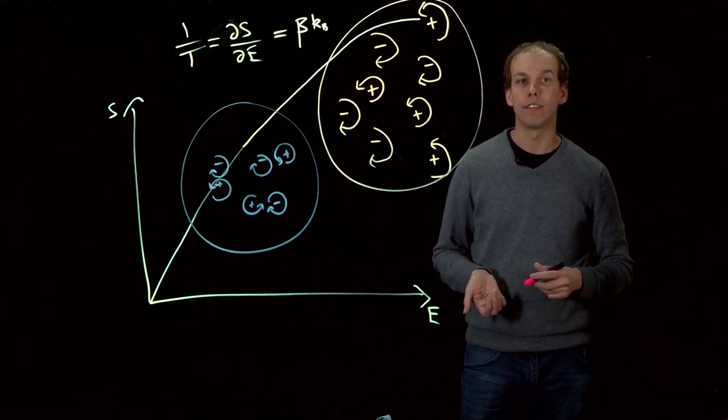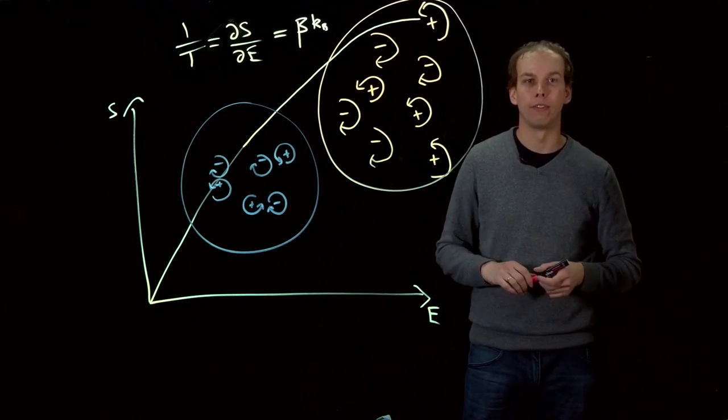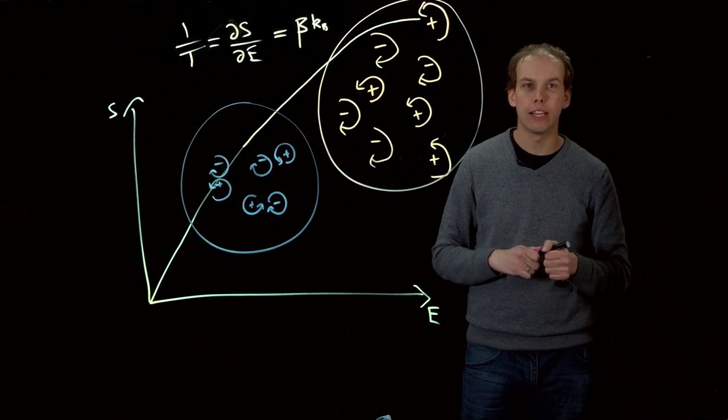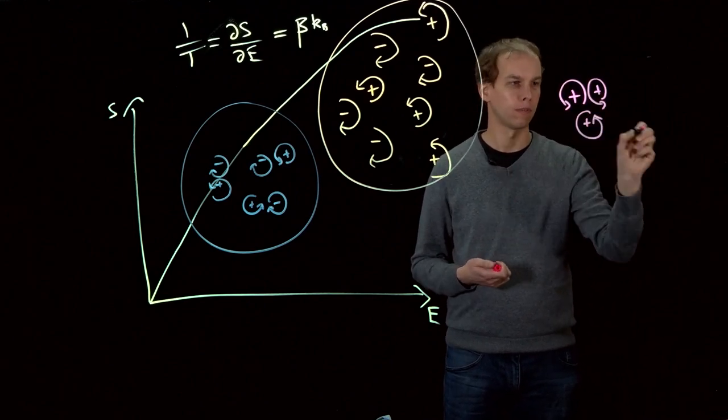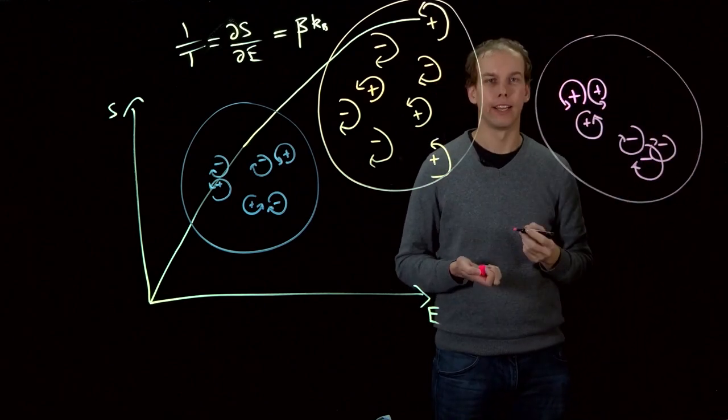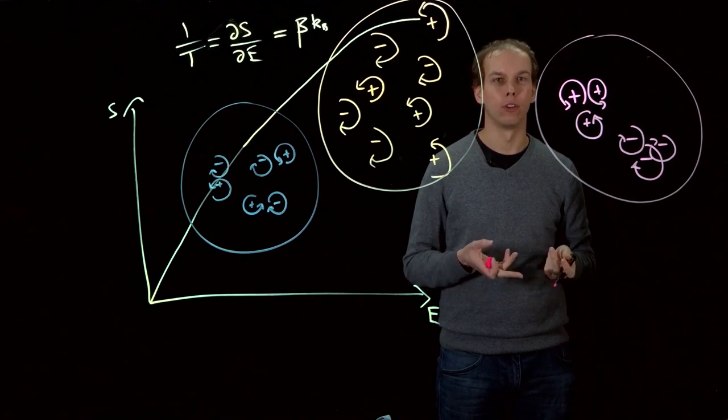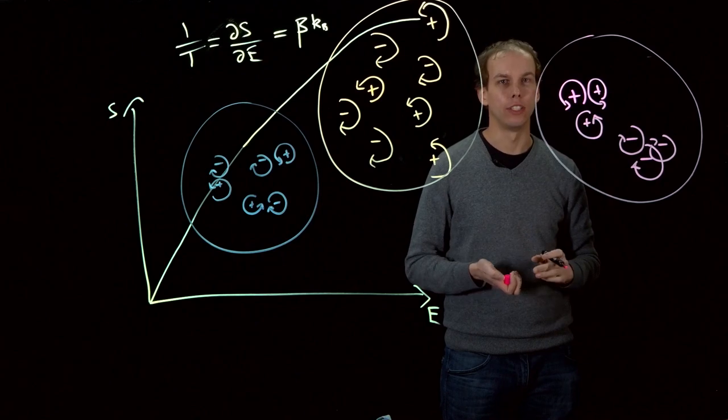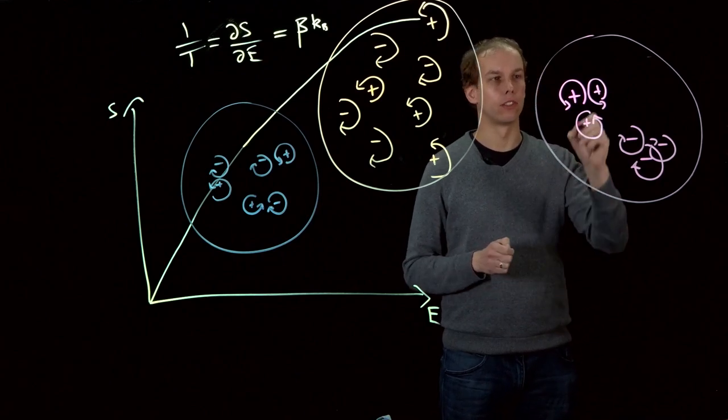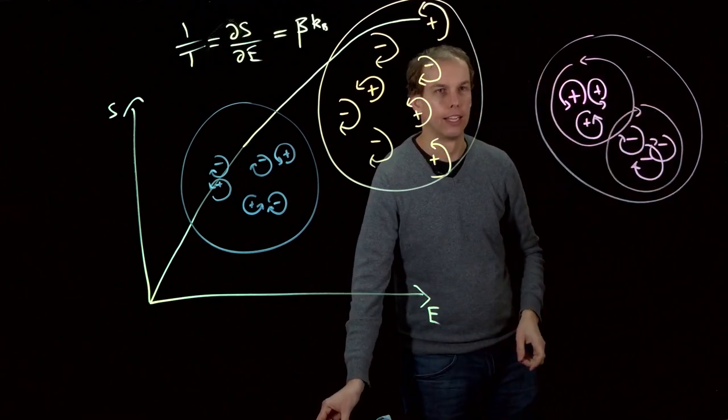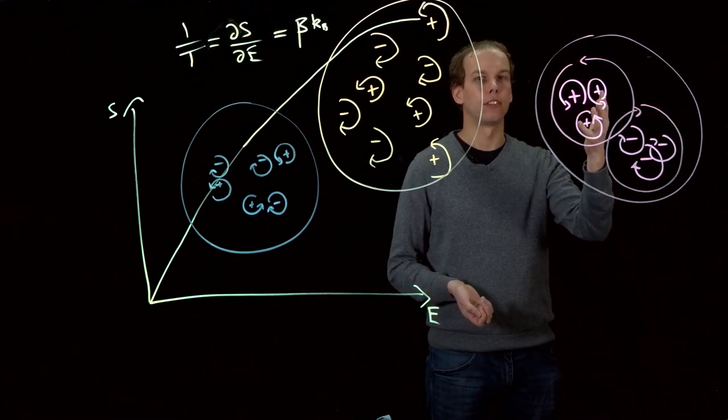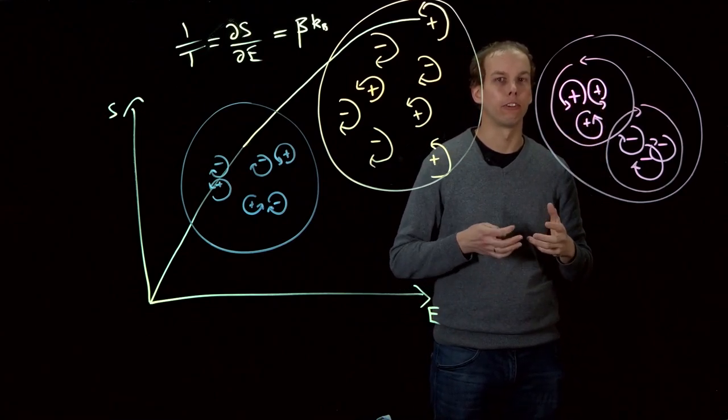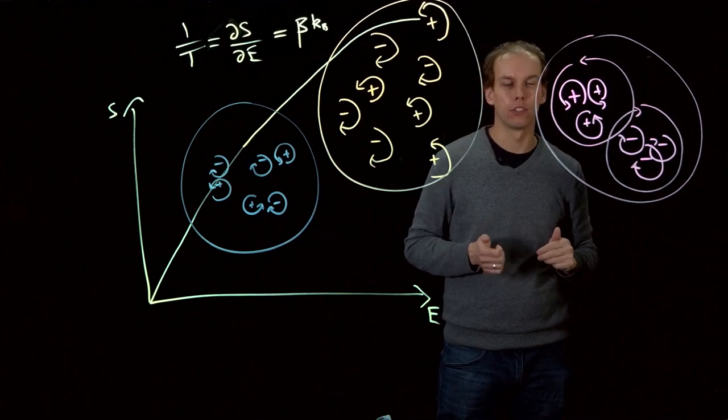Instead, if the vortices begin to pair up with other vortices of the same sign as themselves, then overall the fluid is going to look as though it has just got two giant vortices rather than lots of individual little ones, as these individual vortices fields add together to create larger and larger flow fields.